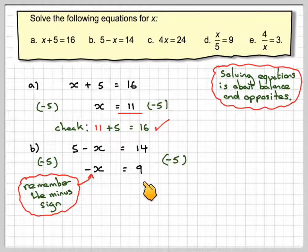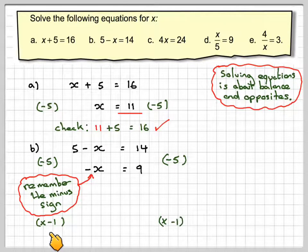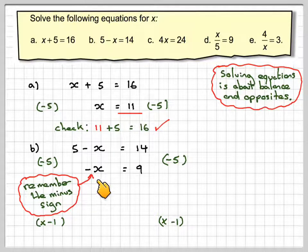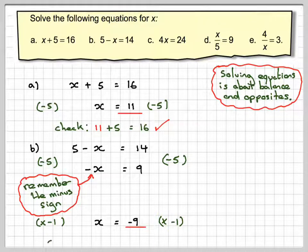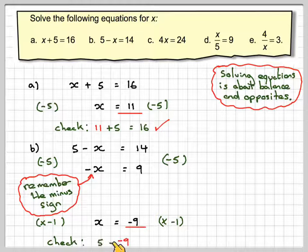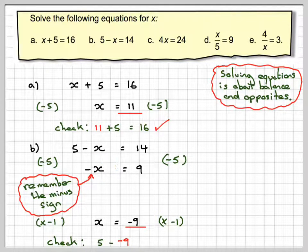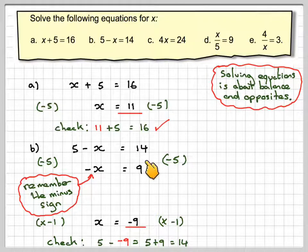We've got minus x equals 9, so if we multiply both sides by minus 1, minus 1 times minus x gives me x, and then minus 1 times 9 gives me minus 9. If we check, 5 minus minus 9, because it's 5 minus whatever x is, so minus minus means plus, so 5 plus 9 gives 14. That's what I expected to get, so that's the answer.